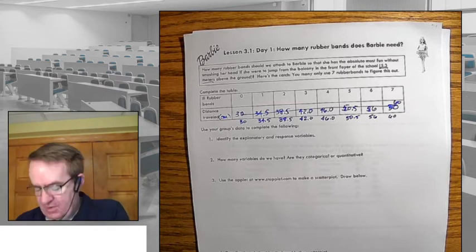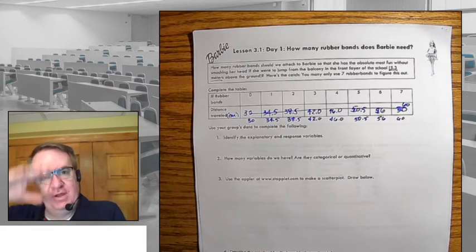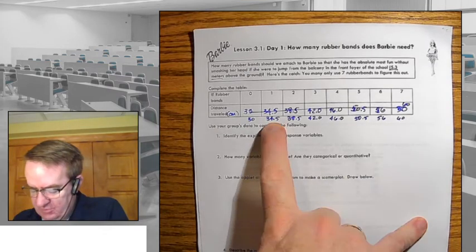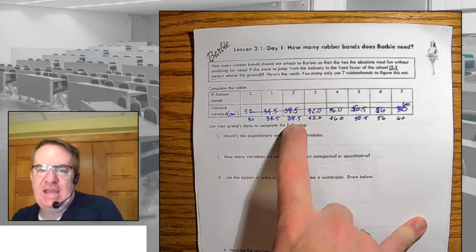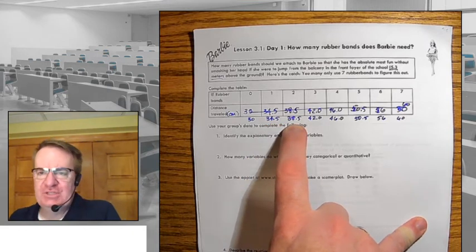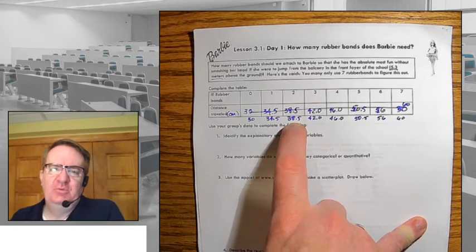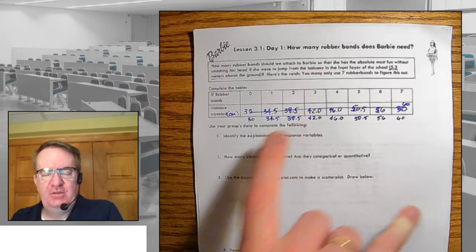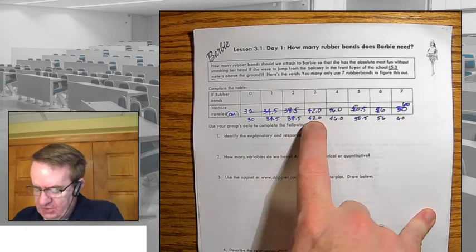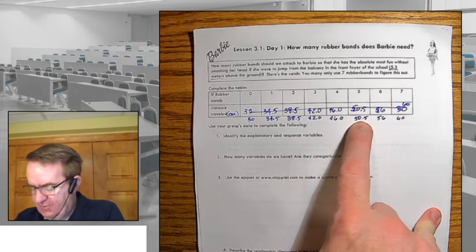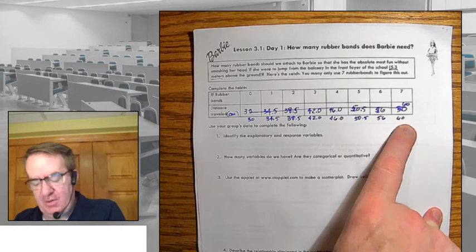And then with each rubber band on there, a varying amount of bounce went down. So like the first rubber band, a lot of them go down 34 and a half. And we did this to the nearest half centimeter just because when Barbie's falling and bouncing back up, it's a very quick thing. So we've got 34.5, 42, 46, 50.5, 56, and 60.